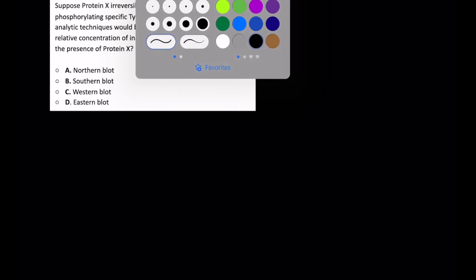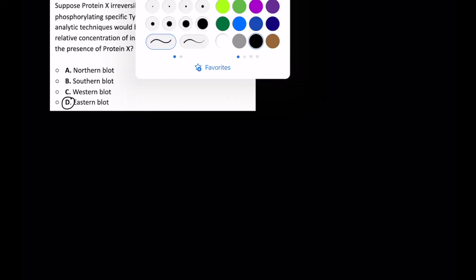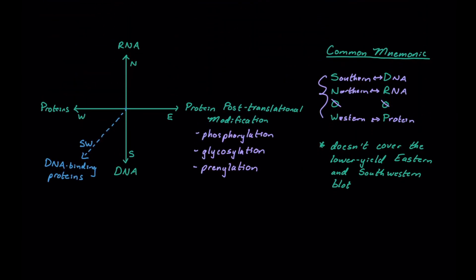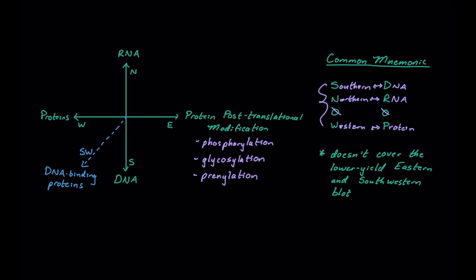Hopefully you've given this problem a chance before we go over it, but having read through it, we should see that our correct answer will be Eastern blot, based on what we went over before. Because if we look and see what Eastern blot was doing, it was looking at protein post-translational modification. And one of those ways was phosphorylation.